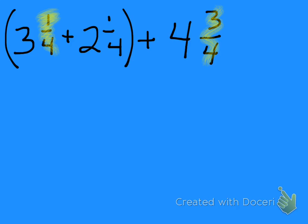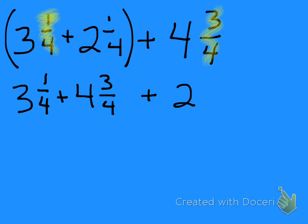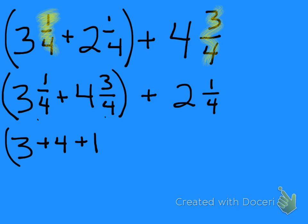So I'm going to use the property of addition called the commutative property and change the order of these fractions. I'm going to take 3 and 1/4 plus 4 and 3/4, then add my 2 and 1/4. Then moving to the associative property, I'm going to group these and do them first. In my head I know 1/4 plus 3/4 equals a whole, so I'm thinking: 3 plus 4 plus that whole, then I'll add the other fraction.